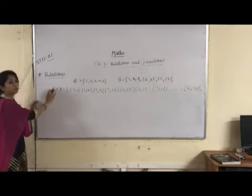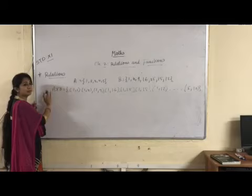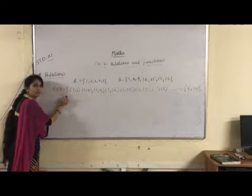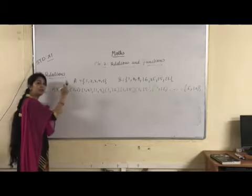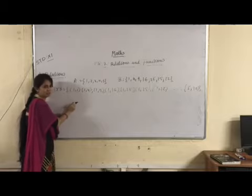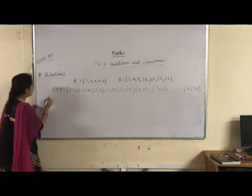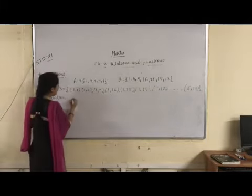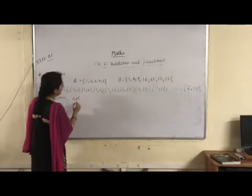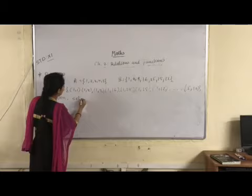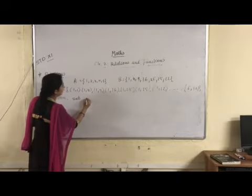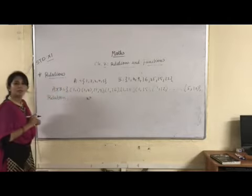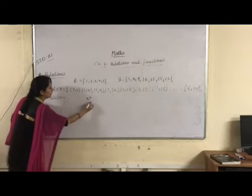Now see, this is the Cartesian product, the cross product. Now what is the relation? Relation means what? It is a set of Cartesian product, but here, like the set builder form, one well-defined characteristic is given, one property is defined here. Here I am defining one relation from set A, the relation is x square.